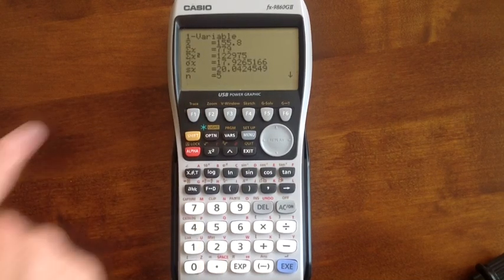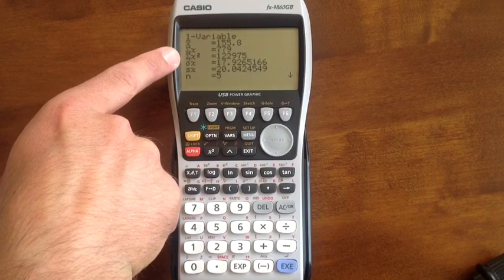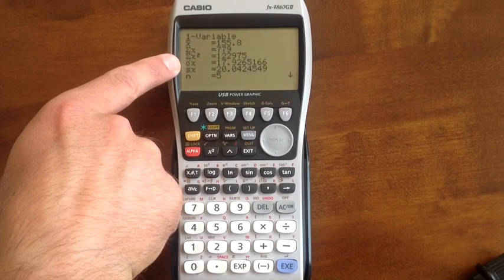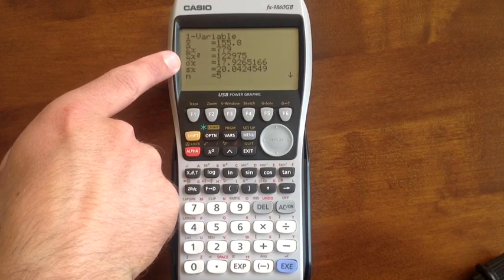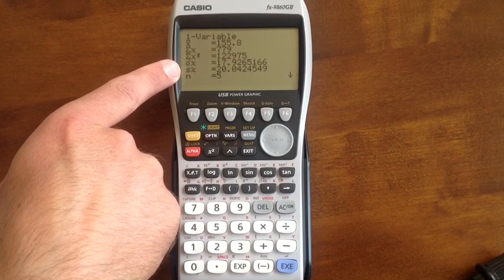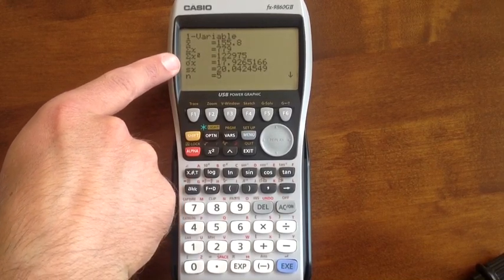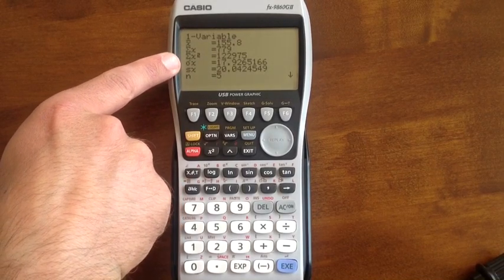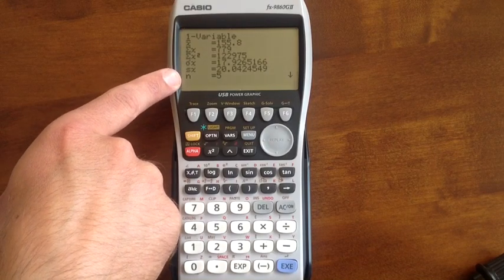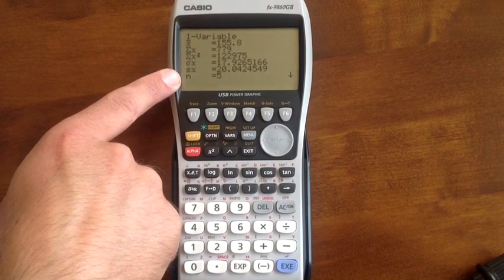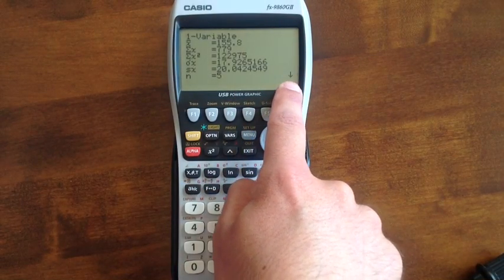Upon pressing that, it does a lot of calculations for us. We've got x bar, the mean. It's telling us the sum of x, the sum of x squared, and sigma x and sx. Sigma x is the standard deviation. Those of you who are doing further maths A-level, you'll need sx. For everybody just doing standard A-level maths, sigma x is the standard deviation. It tells us n5, so there are five pieces of data. Notice also there's a little arrow over here telling us there's a bit more information it's going to give us.